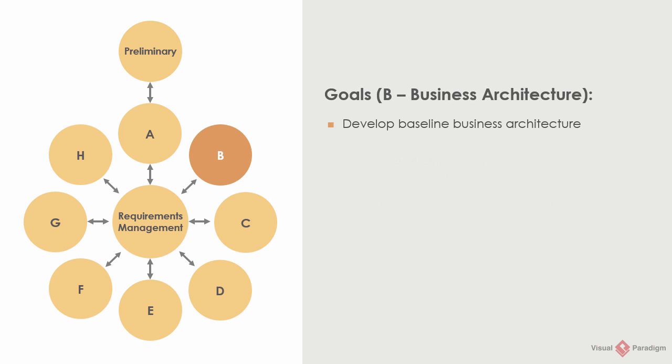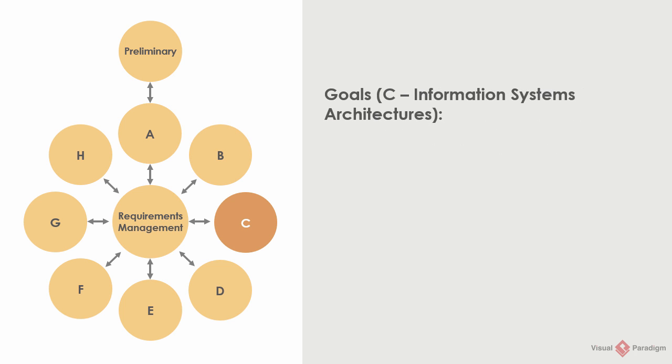The goal of Phase B is to develop the baseline business architecture representing the components that form the business and their interrelationships today, and the target architecture, which is the business architecture we want to develop. Phase C focuses on information system architectures. You will develop the baseline and target architecture of the data architecture to find out a comprehensive approach to data management, data migration, and data governance.